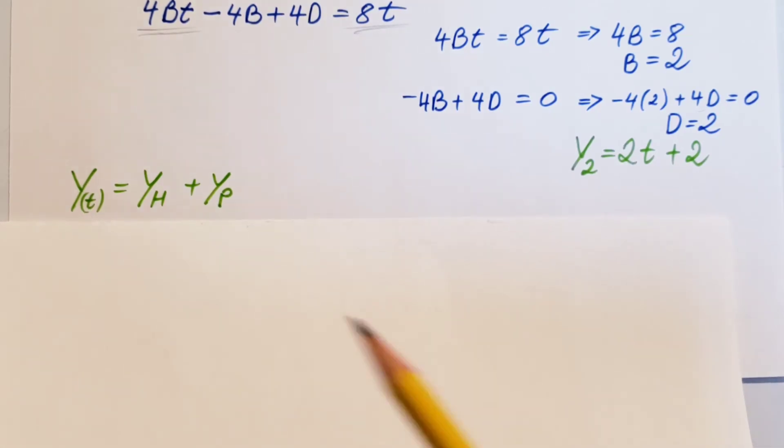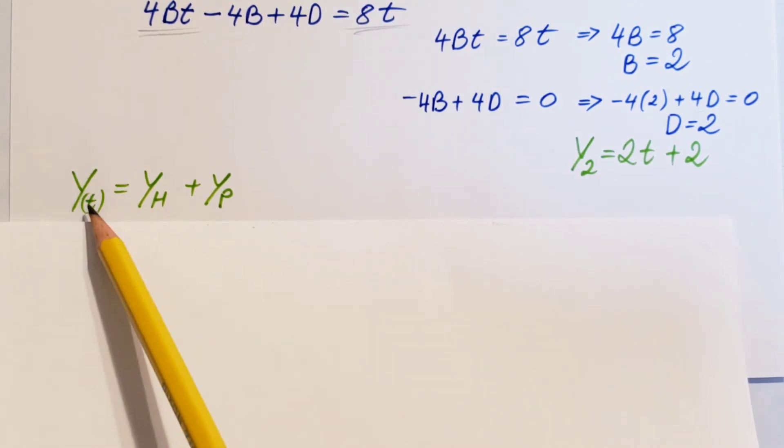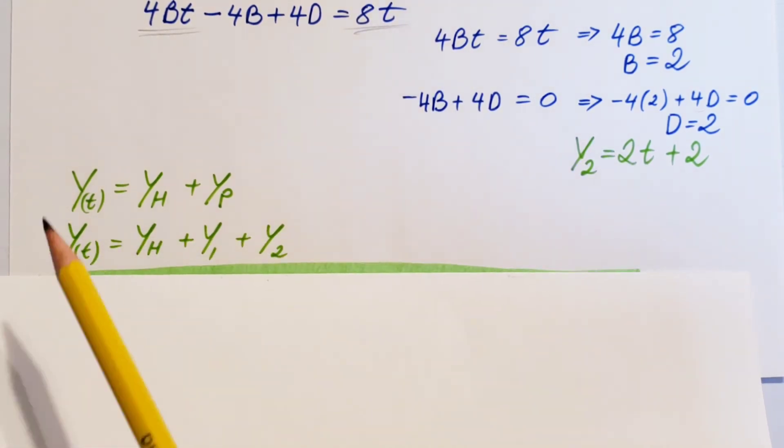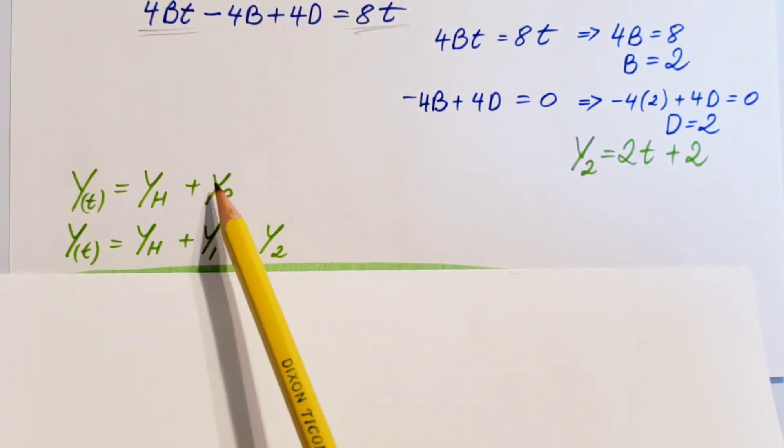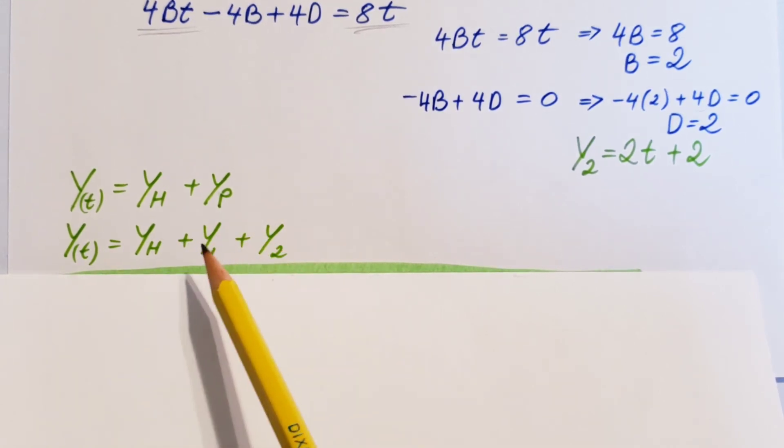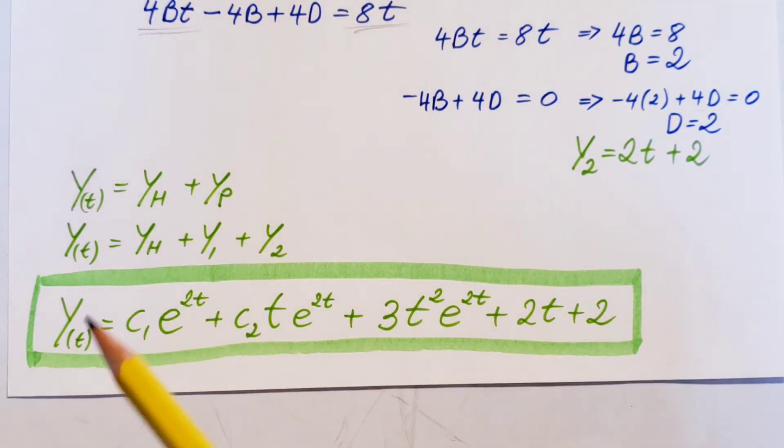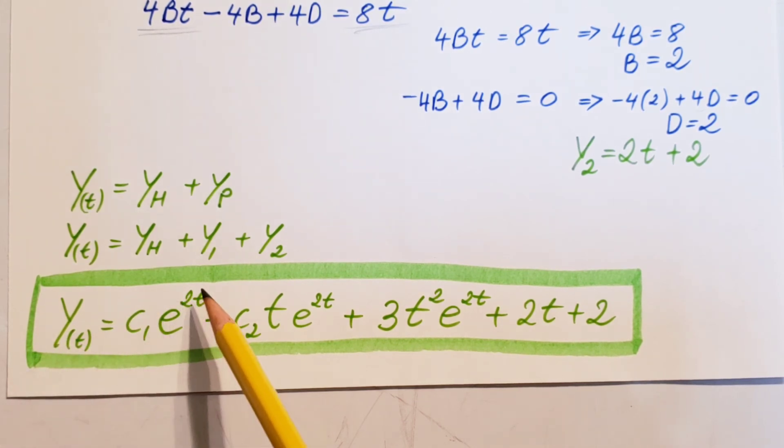For the final write-up of our solution, we know that y is equal to the homogeneous plus the particular solutions. Now, our homogeneous solution we have, but our particular solution, we have two pieces of it. y1 and y2, make sure we don't forget either one, and simply combine them. Our final solution for this ODE: c1 e to the 2t plus c2 t e to the 2t plus 3t squared e to the 2t plus 2t plus 2. And that would be our final solution for this ODE.